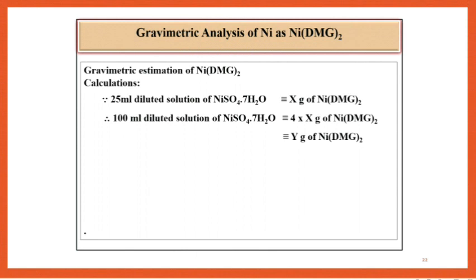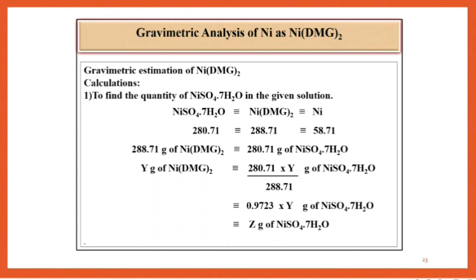25 ml diluted solution of nickel sulfate corresponds to x gram of nickel DMG. Therefore 100 ml diluted solution of nickel sulfate corresponds to 4 times x gram of nickel DMG, which is equal to y gram of nickel DMG.